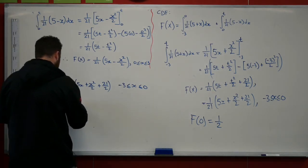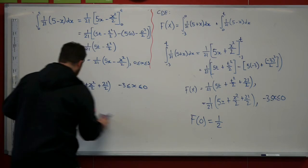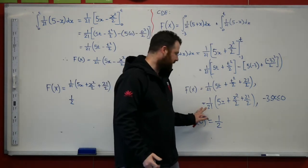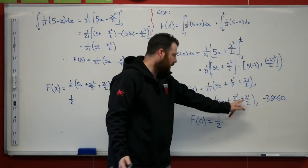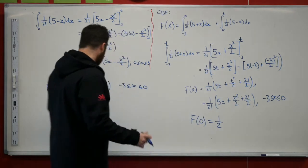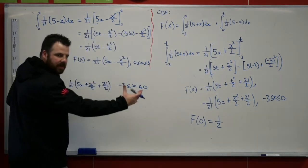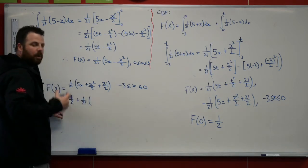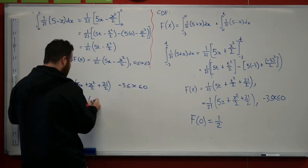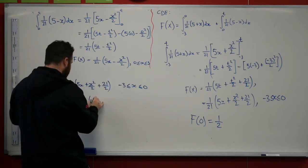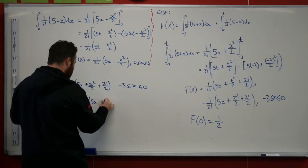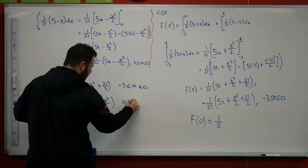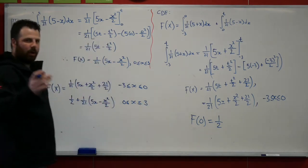It's then going to equal half. Remember, half is the value of this up into the point 0. The area up into the point 0 is half. So I want everything up until the border, which was half, plus wherever I'm going up to, what my new upper limit was. And for that one, I'm using this one. 5x minus x squared on 2, and that's for values of x between 0 and 3.